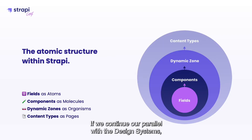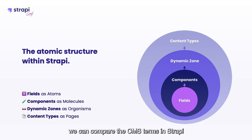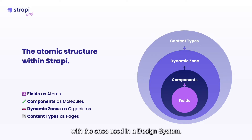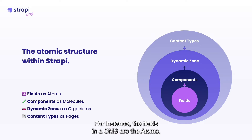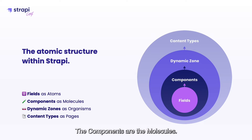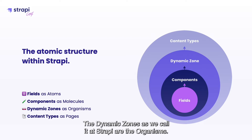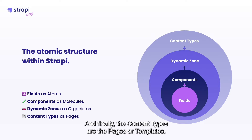If we continue our parallel with the design system, we can compare the CMS terms in Strapi with those used in a design system. For instance, the fields are the atoms, the components are the molecules, the dynamic zones — as we call them at Strapi — are the organisms, and finally the content types are the pages or templates.